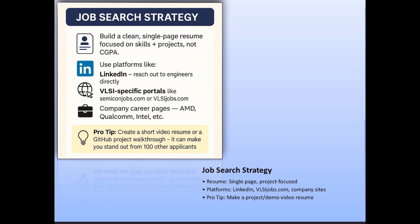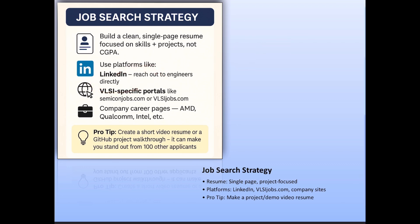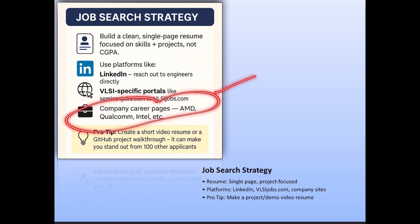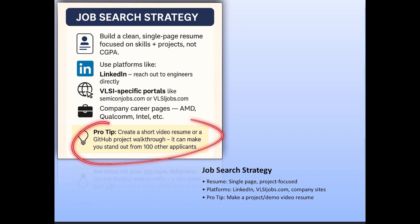Now let's talk about the most important step: getting that job. Build a clean single-page resume — highlight your skills and projects, not your CGPA. Use LinkedIn to reach out to engineers directly or apply through the platform. Use job portals like Semicon Jobs and VLSIjobs.com. You can also visit the career pages of companies like AMD, Qualcomm, and Intel directly. Pro tip: create a short video resume or a GitHub project walkthrough — it can make you stand out from 100 other applicants.